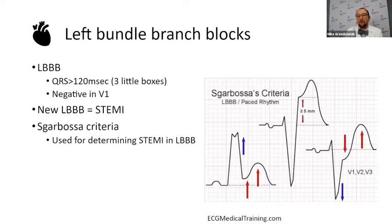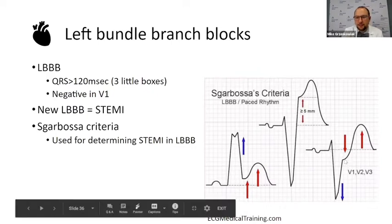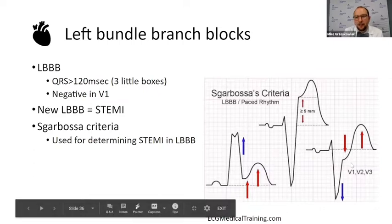That's why it's helpful to compare with a prior EKG to see whether ST elevations are old or new. However, the criteria address this by saying if someone has five millimeters of elevation — which is pretty significant and usually won't occur from repolarization alone — you should be concerned for ST elevation. The third criterion: if you have a negative QRS complex deflection and an ST depression of at least one millimeter in the precordial leads, specifically V1 through V3, then you should be concerned for a STEMI.